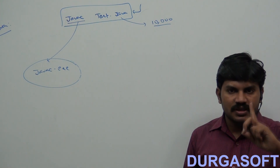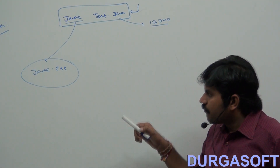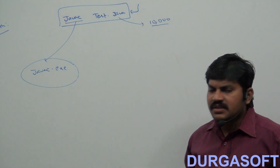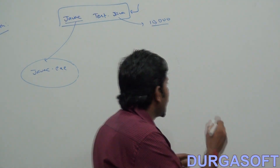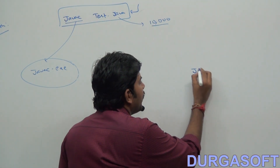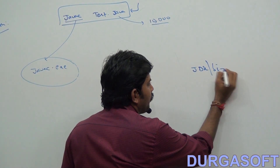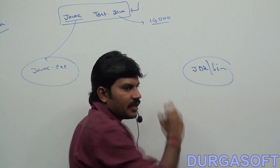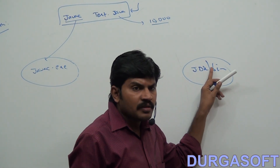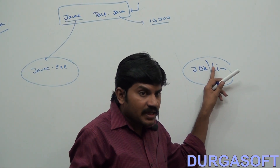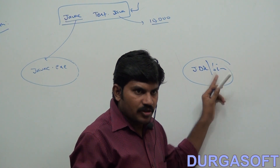Compulsorily, we have to set the PATH. Can you tell where javac.exe is available? It is inside JDK — JDK bin. Inside JDK bin. What is 'bin'? Binary executable.